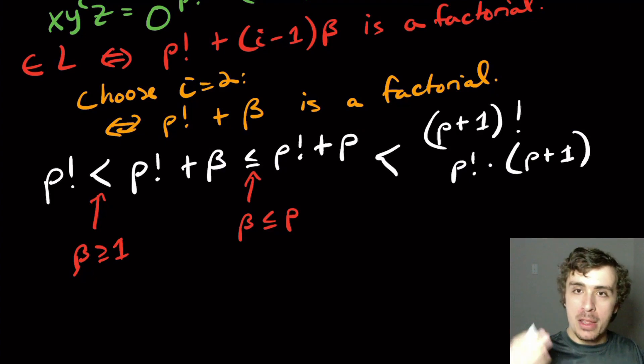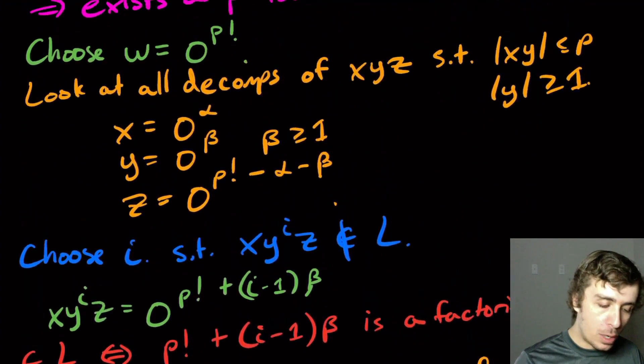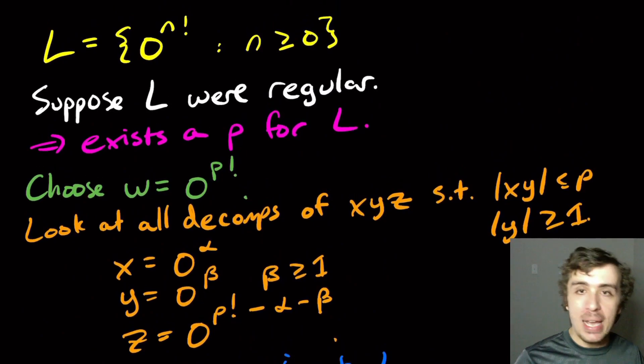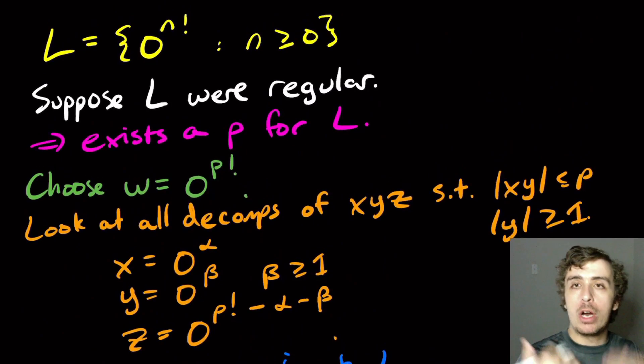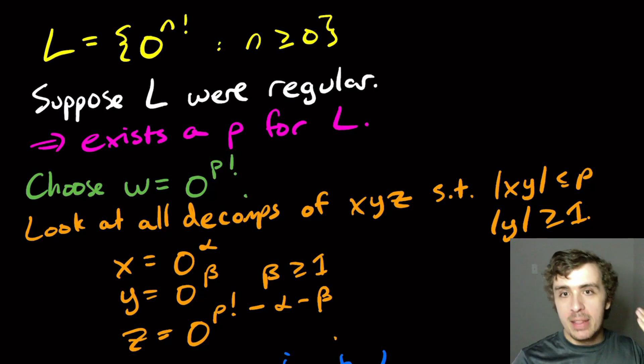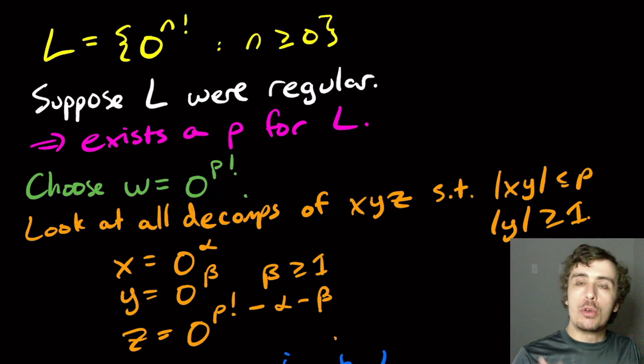So therefore this length, whatever it is, is not a factorial. And so therefore this language is not regular because if it were, we would always arrive at a factorial number. But we showed that if you choose the right value of i, in this case two, you can show that you will not arrive at a factorial number.